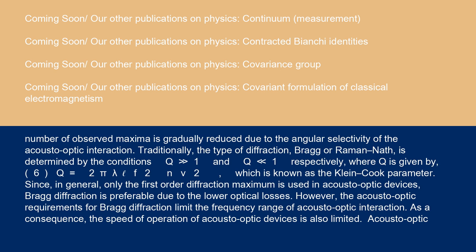Traditionally, the type of diffraction, Bragg or Raman-Nath, is determined by the conditions q >> 1 and q << 1, respectively, where q is given by Equation 6: q = 2πλf²/(nv²), which is known as the Klein-Cook parameter.